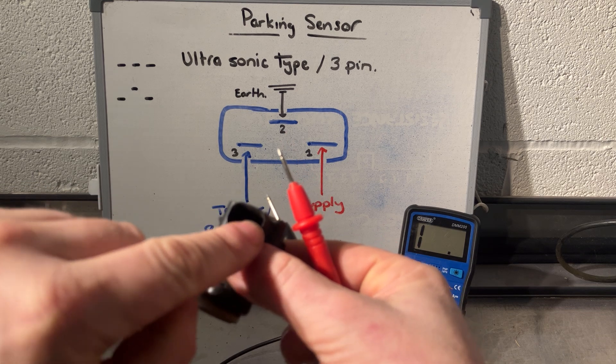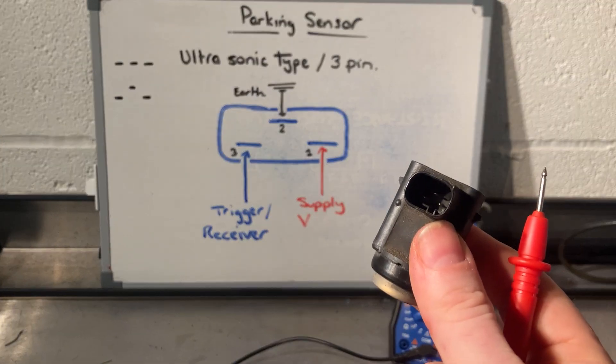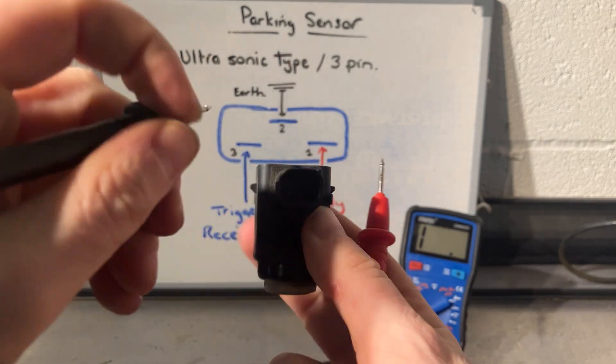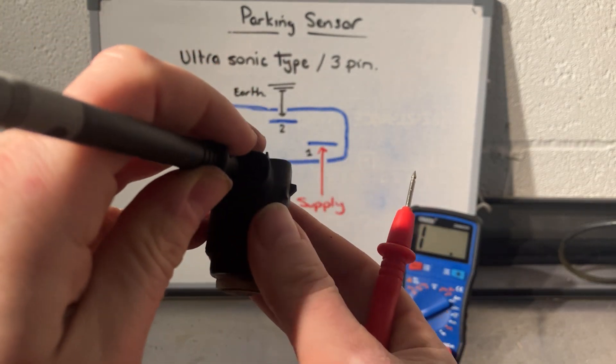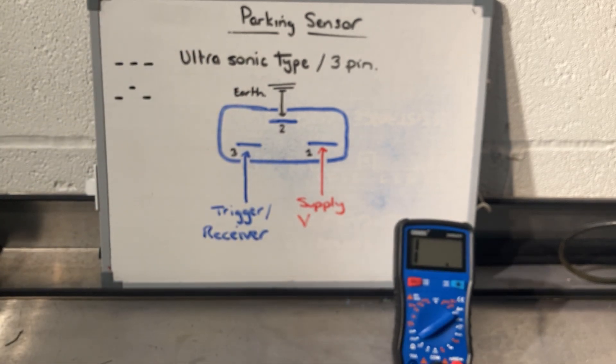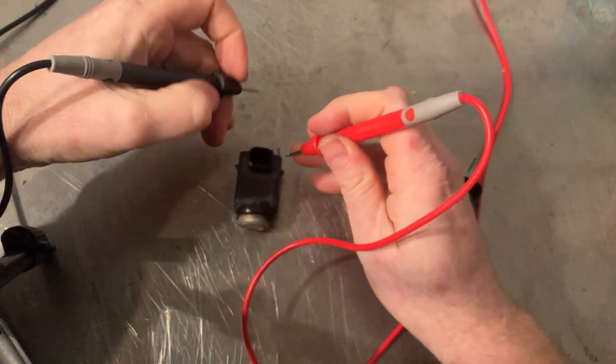So all I'm going to do then is bridge between pin number one and pin number two, which is the two on the right hand side. Bear with me if I go off camera because they're very small pins. I do have crocodile clips but I can't get into them because they're that small. So I'm just going to put it on the bench here for a moment. I'll tilt you guys down. I'm going to put it on the bench and I'm going to go from number two to number one.